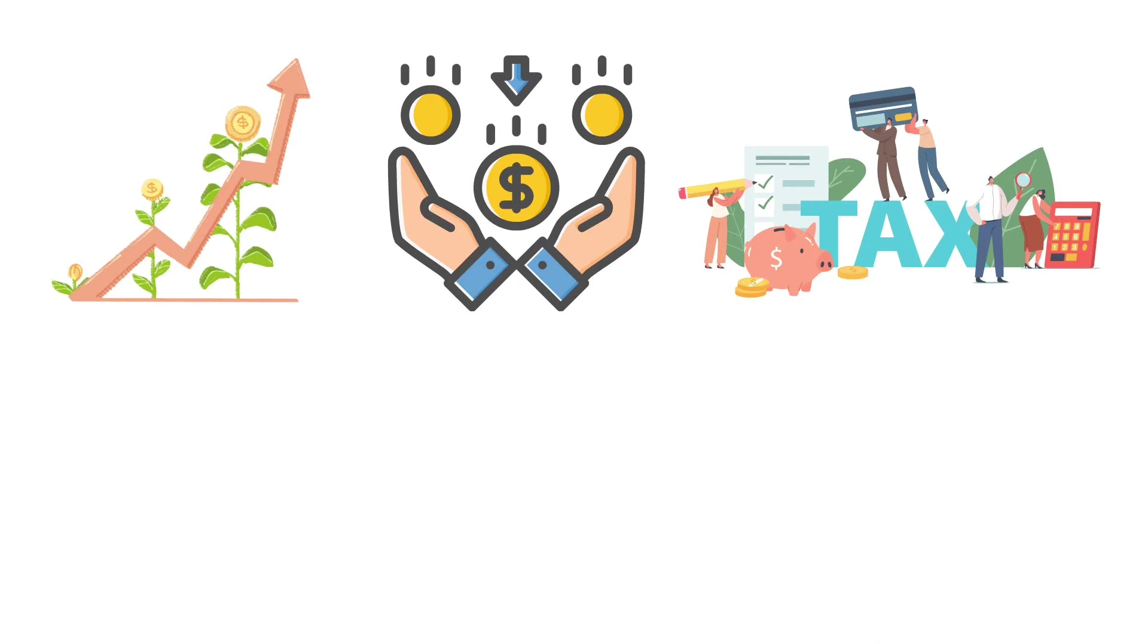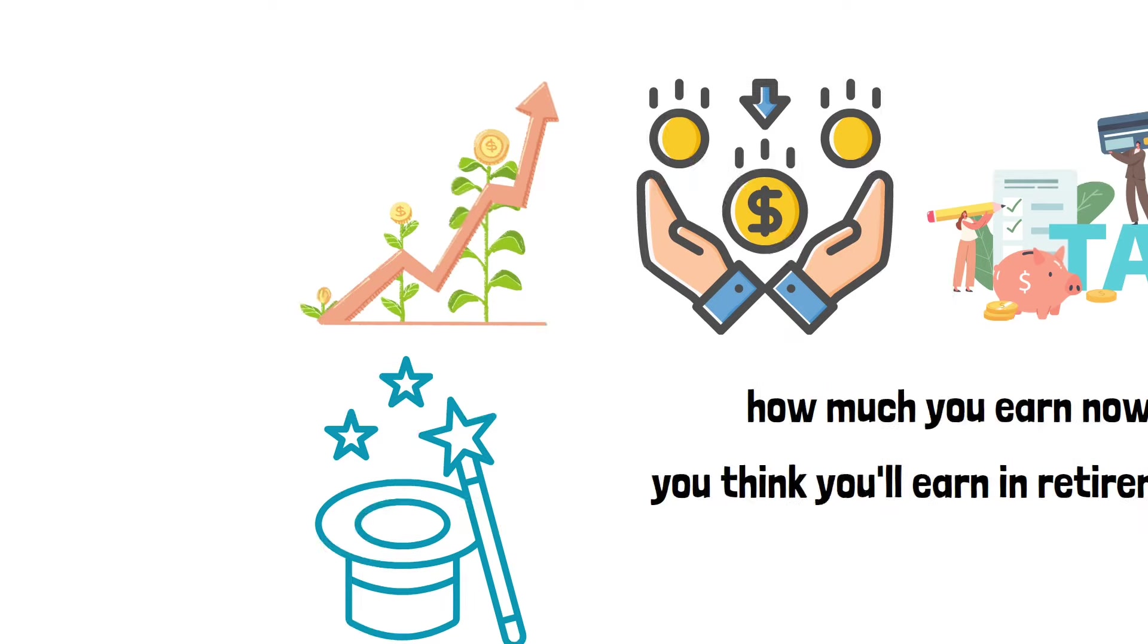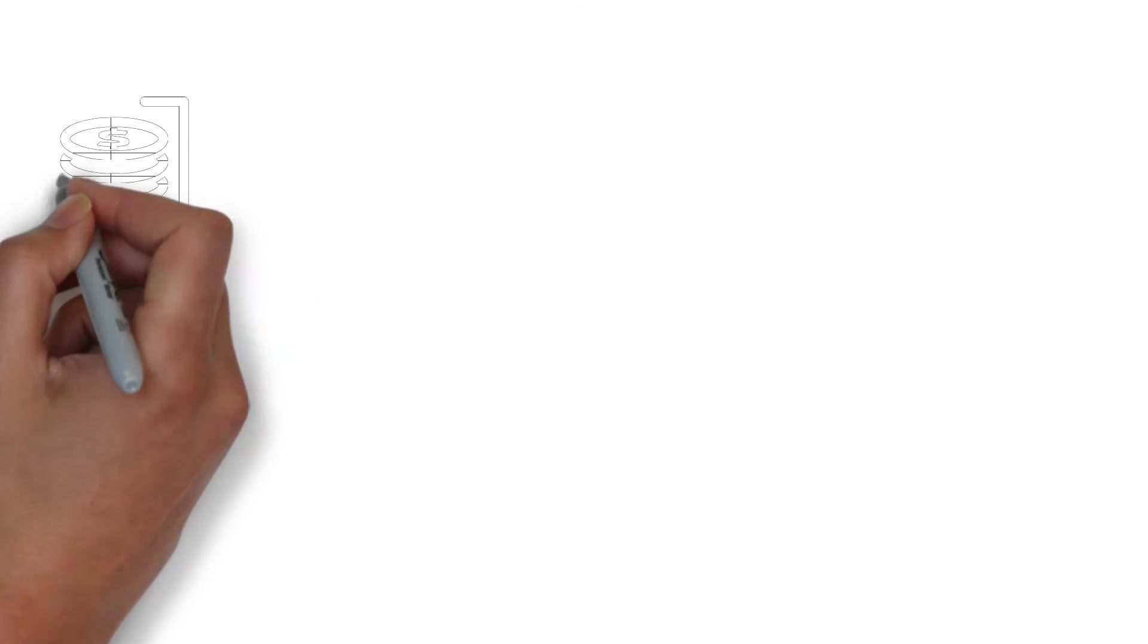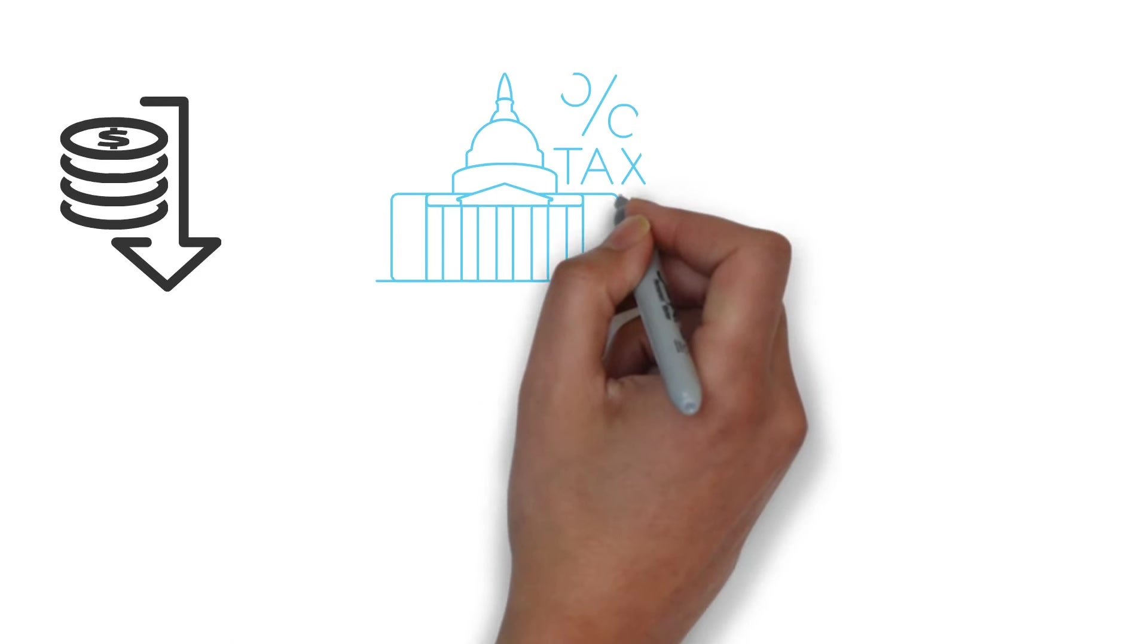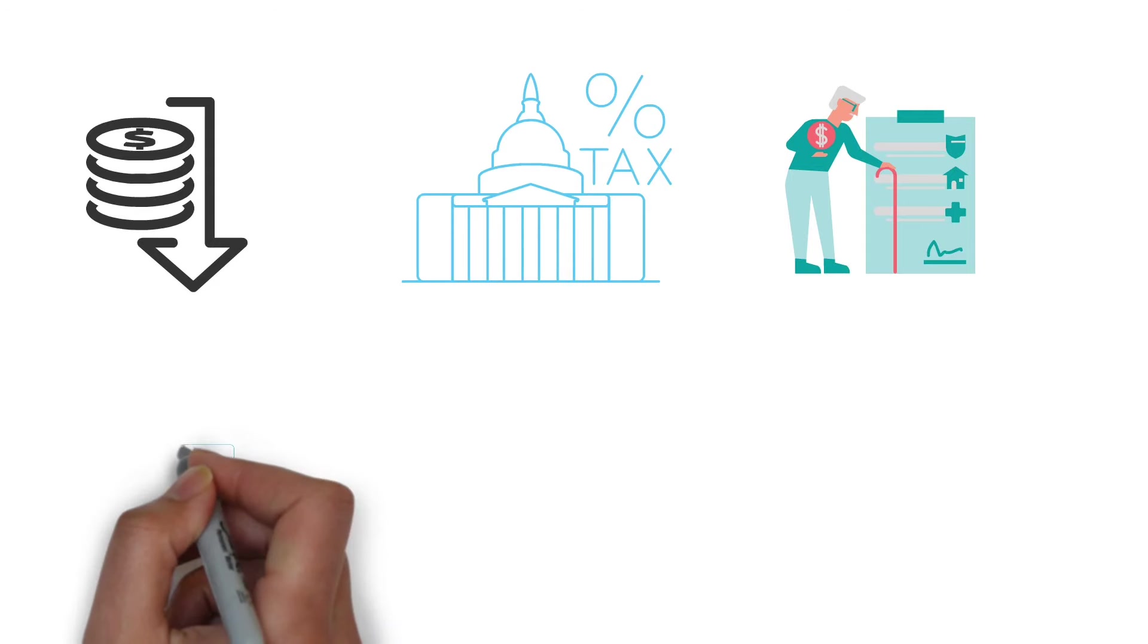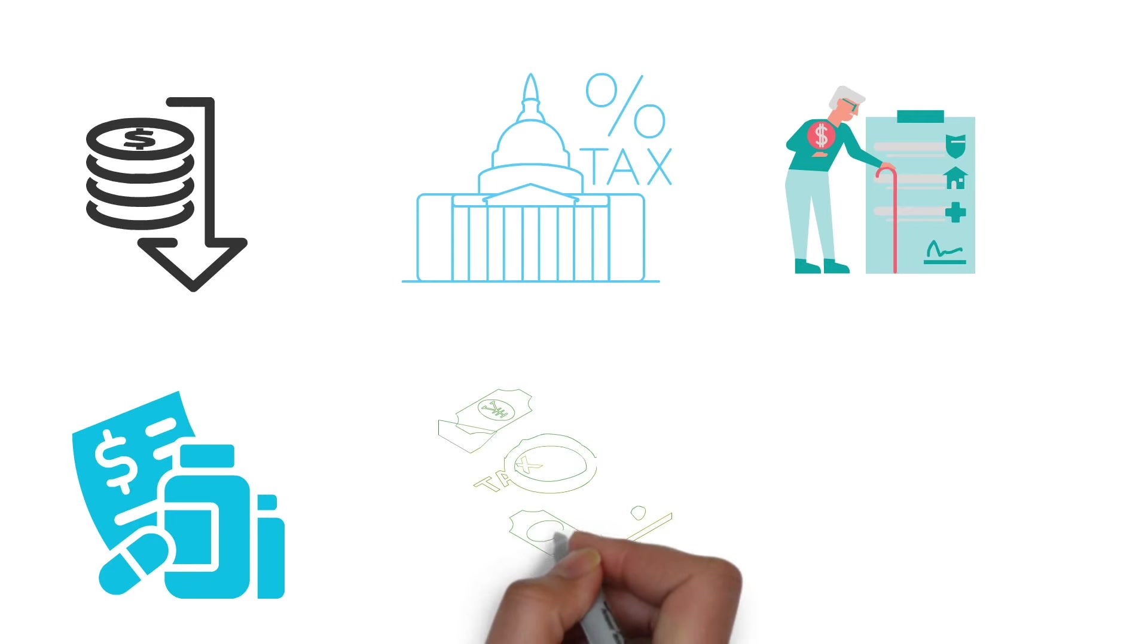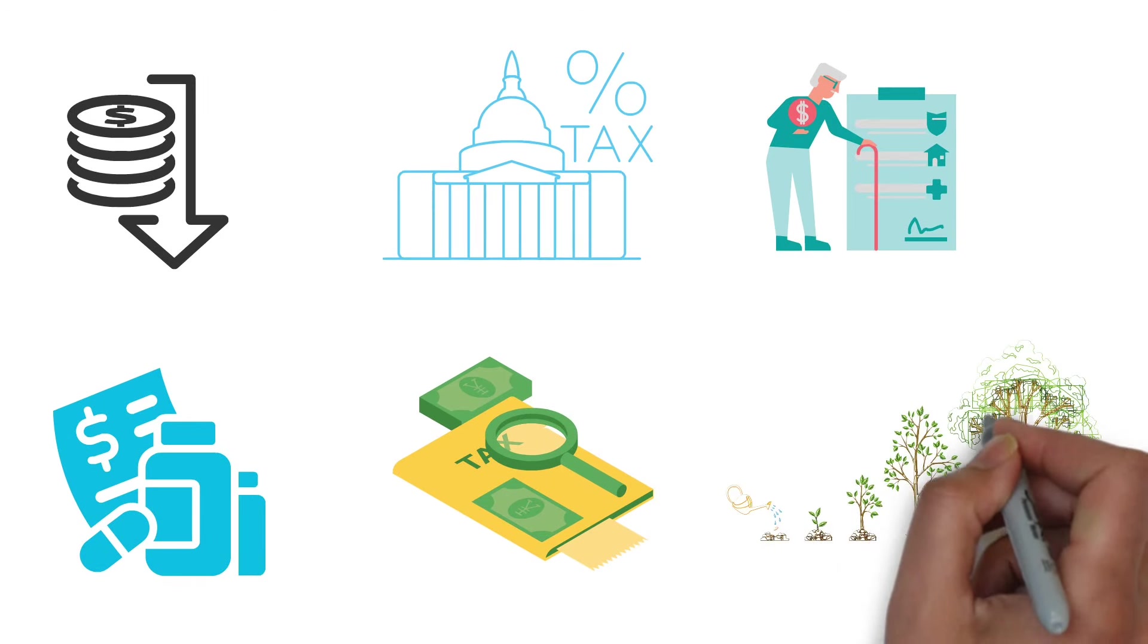Now there's also a type called a Roth IRA. With this one, you pay taxes on your seeds before you plant them. That means no taxes while it grows and no taxes once it's time to eat the apples. The trick is knowing which type of account to use. If you believe you'll be in a lower tax bracket when you retire, then the 401k can be your friend. On the other hand, if you imagine you'll be in a higher tax bracket in retirement, Roth accounts are attractive. The big takeaway on tax efficiency is choosing the right place to grow your money so that taxes don't take as big a bite out of it, letting more of your investments stay with you to grow over time.